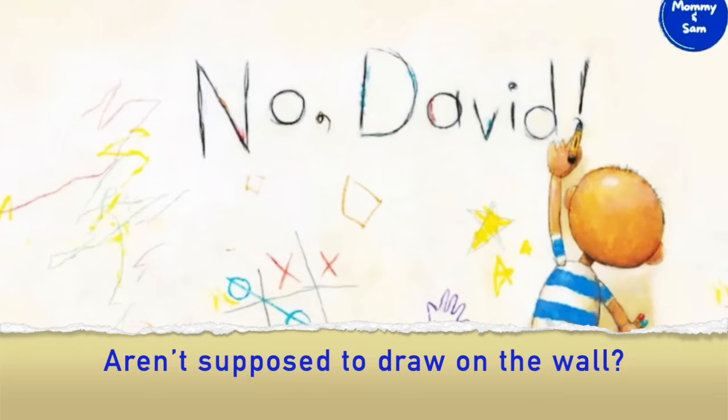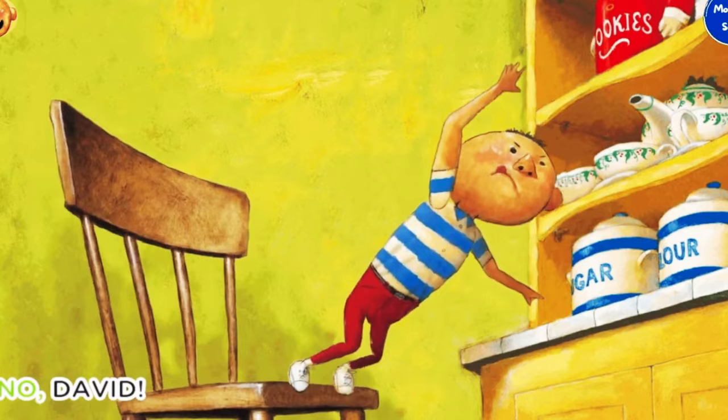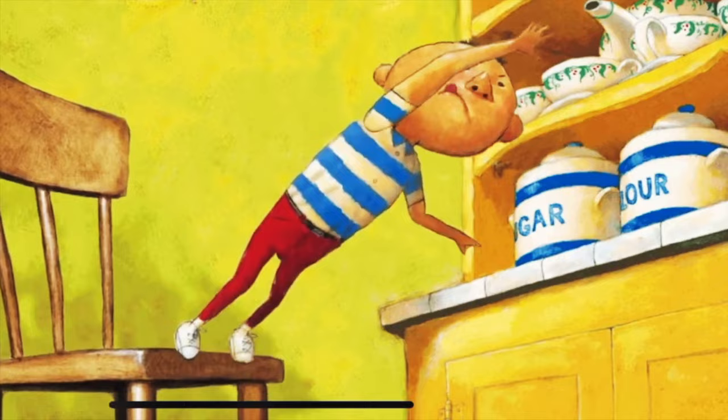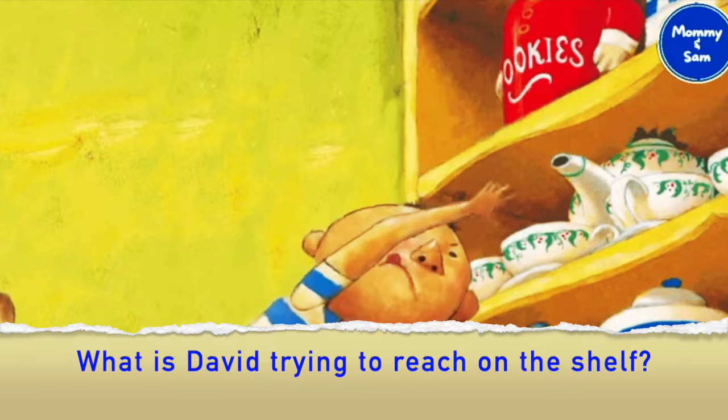No, David! Where is David? David is standing on the chair. Is it safe to stand on the chair? No! What is David trying to reach on the shelf? Cookies! Do you like to eat cookies? Yes!